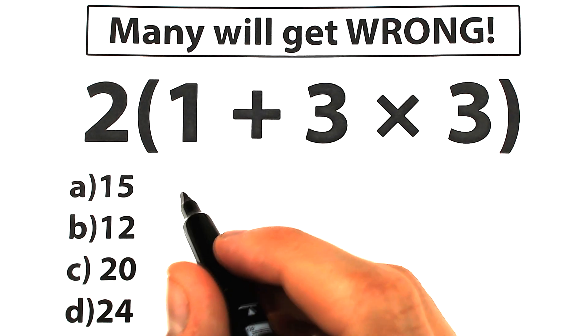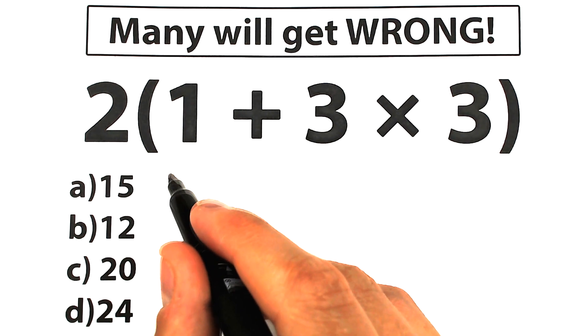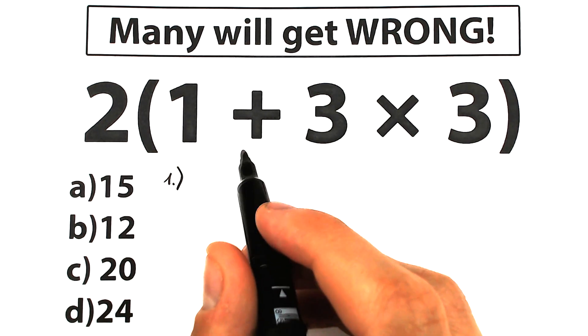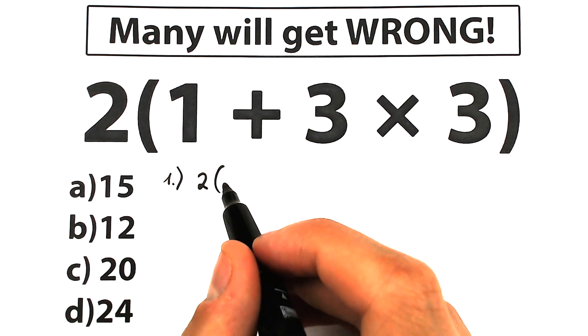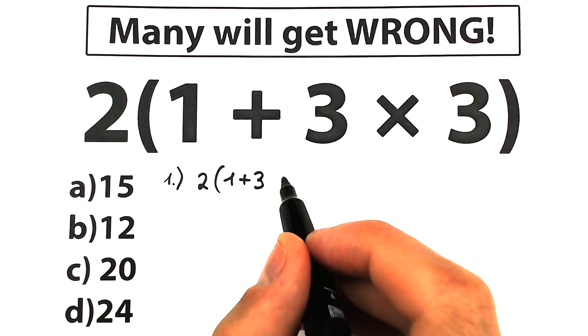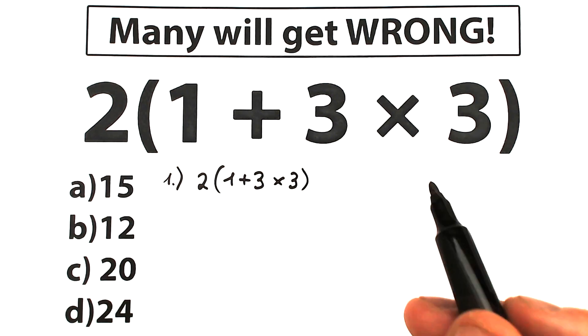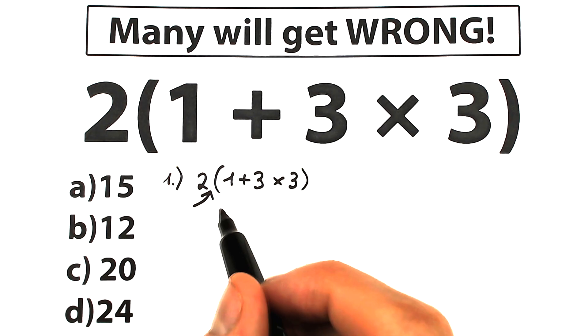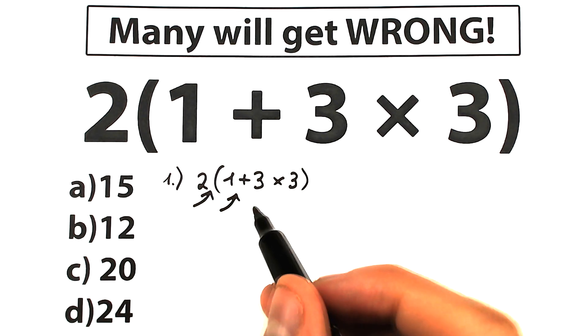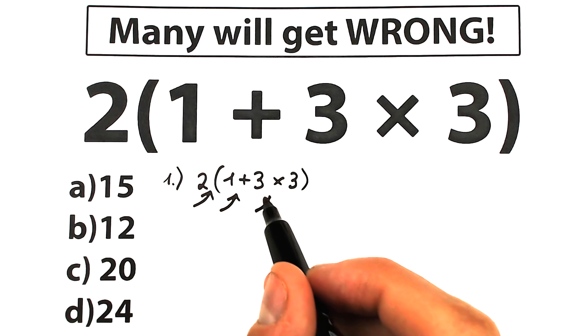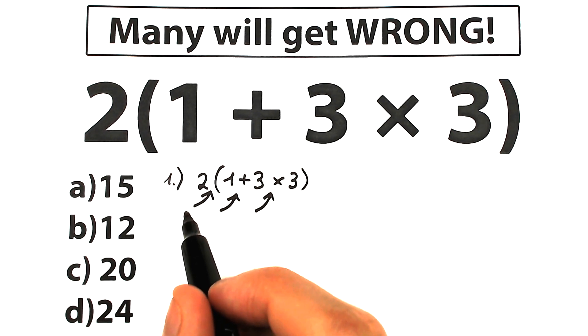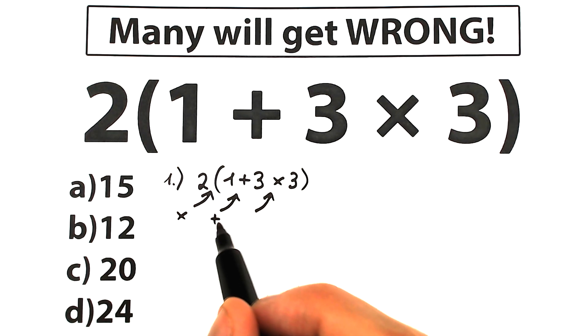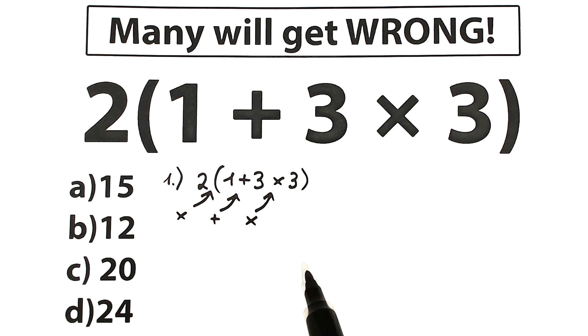First of all, I want to start with this first explanation. Take a look closely. Here is our first interpretation. A lot of students solve this question like that. We have 2, and right here we have 1 plus 3 times 3. For example, they start with this multiplication. Another part of students start with this addition. Completely another part of students start with this multiplication. So right here we have multiplication sign, right here we have addition sign, and right here we have also multiplication sign.